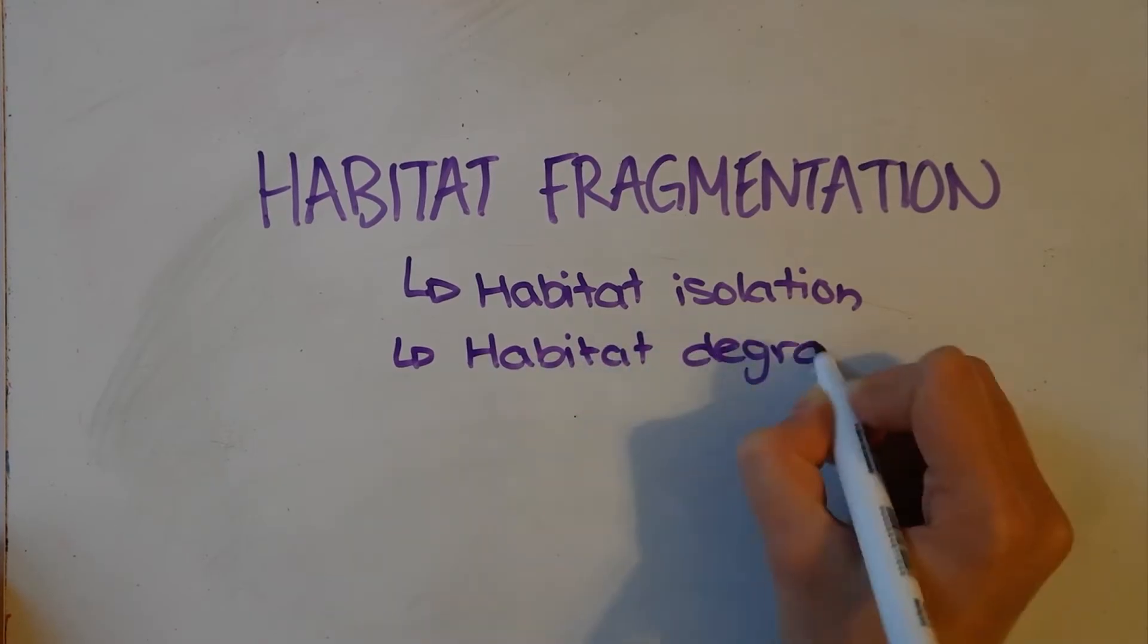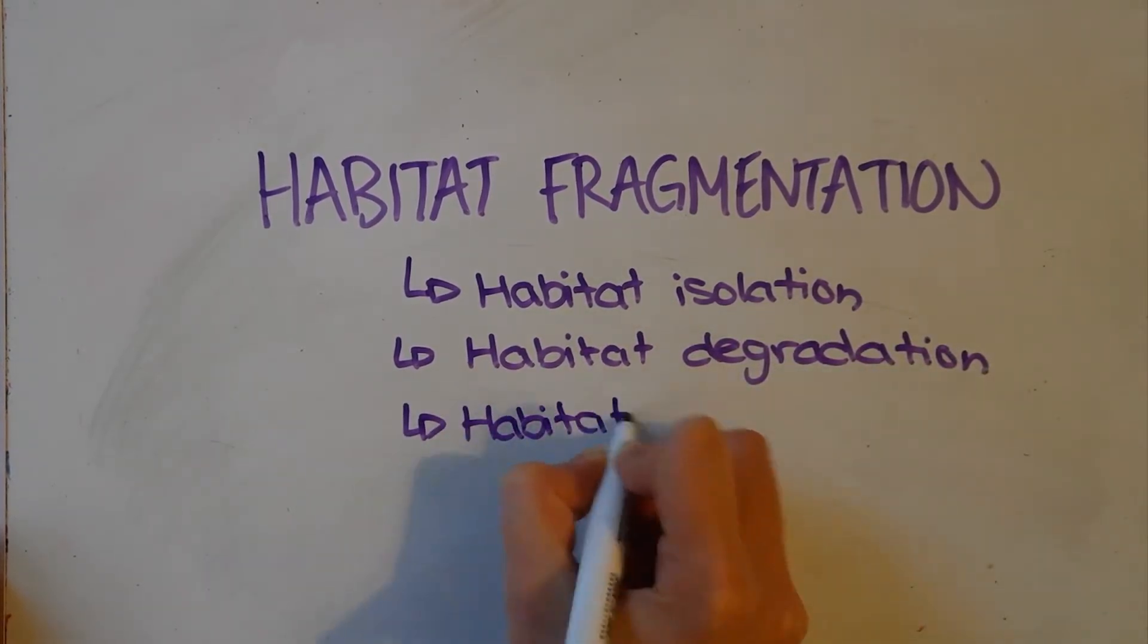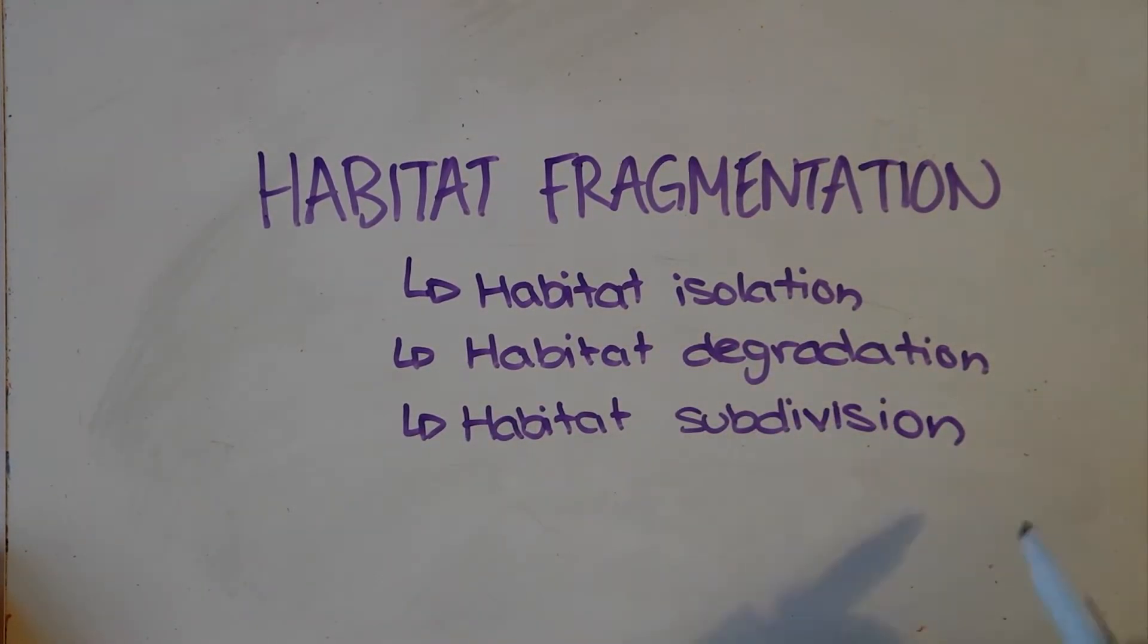Those are habitat isolation, habitat degradation, and habitat subdivision. Although all three of them encompass the same problem, we'll show you the difference with this current example.